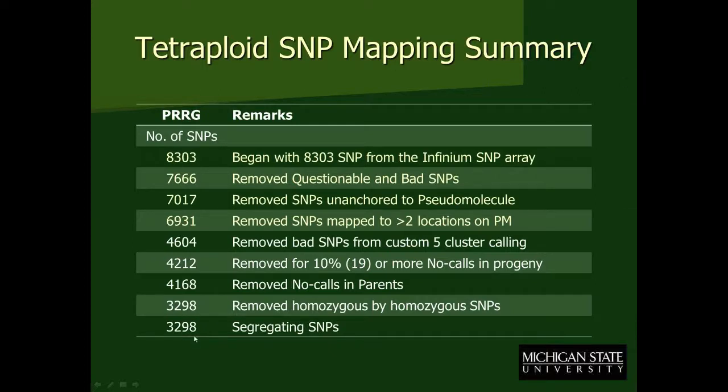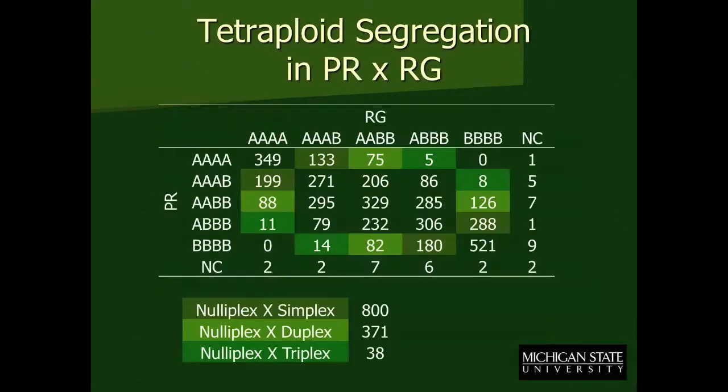We also removed any SNPs where there really wasn't any segregation in the progeny. That gave us 3,298 segregating SNPs in this Premier Russet by Rio Grande Russet mapping population.